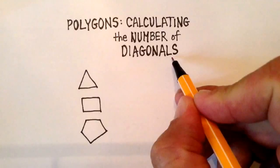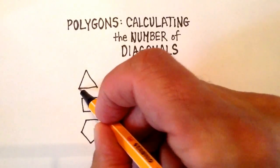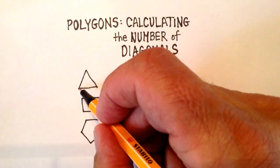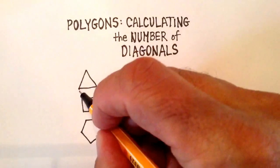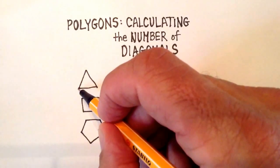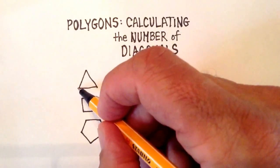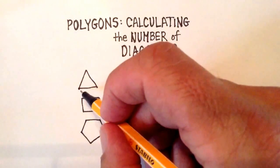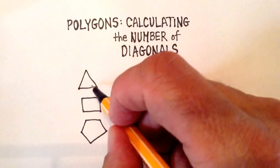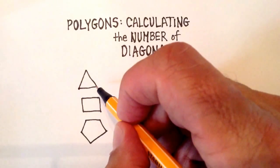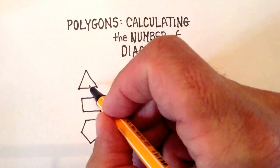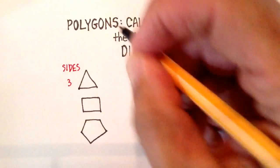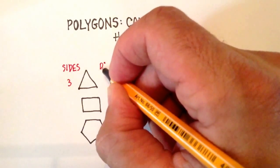Now remember that a diagonal starts at a vertex, and it's a line segment that's drawn to the next non-consecutive vertex in the polygon. So if I start here, I want to go to not the one that's adjacent, or the consecutive one, but the one that's next to it, the next non-consecutive. But what ends up happening in a triangle is there are no non-consecutive vertices. So in a triangle that has three sides, there are zero diagonals.